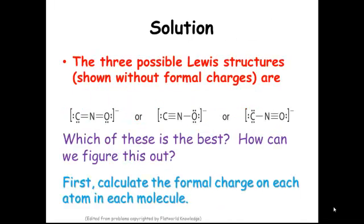Here are three possible Lewis structures, and all of them are shown without formal charges. All of them have an overall charge of minus one. So we're going to learn how to figure out which one of these is the best by calculating the formal charge on each atom in each molecule.